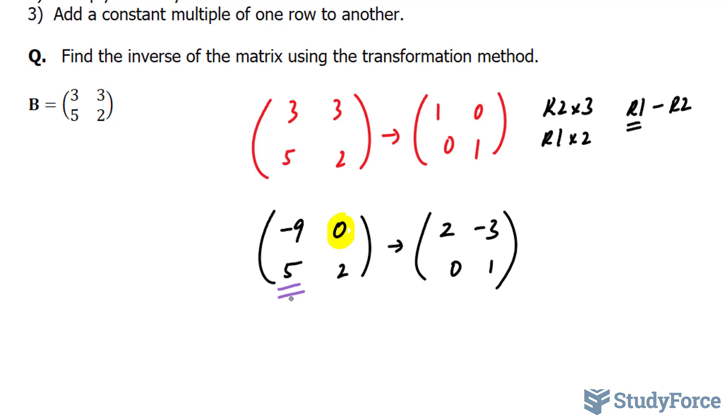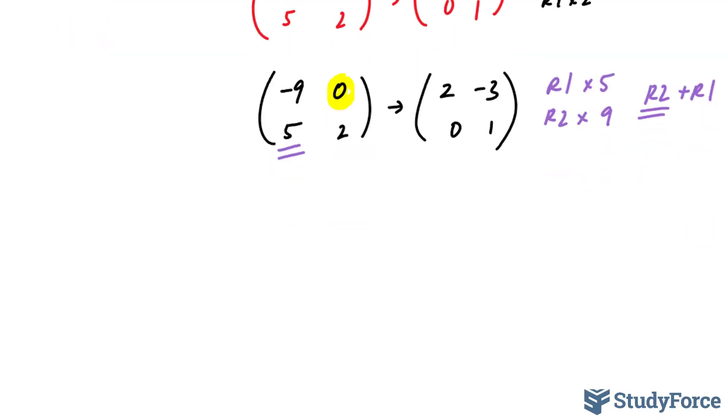what I'll do next is multiply row 1 by 5, row 2 by 9, then add row 2 to row 1. This row in particular will be the one that's changing, whereas row 1 will remain the way it is.